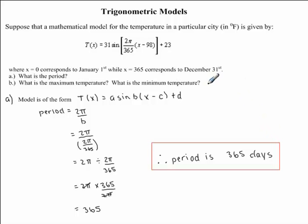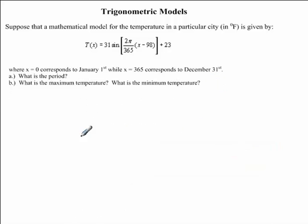Now, let's attempt to answer part B. Part B asks, what is the maximum temperature, and what is the minimum temperature? To help us solve this problem, we need to think back to a sine function. We should all know that a sine function has a maximum value of 1 and a minimum value of negative 1. The sine function has a maximum of 1 and a minimum of negative 1. This will help us in answering part B.